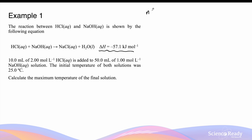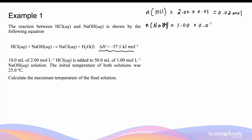This is first done by calculating the moles of the reactants. The moles of hydrochloric acid is 2 moles per liter times its volume of 0.01 liters, which is 0.02 moles. Similarly, the moles of sodium hydroxide is 1 mole per liter times 0.05 liters, which is 0.05 moles. Since hydrochloric acid and sodium hydroxide react in a 1 to 1 ratio, the hydrochloric acid is the limiting reagent. So the moles of water formed is also 0.02 moles, as the ratio between water and HCl is 1 to 1.